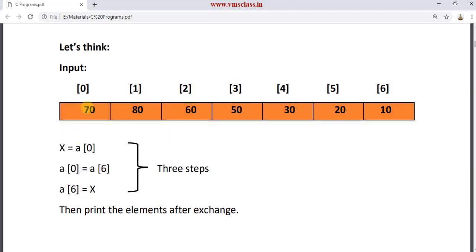Now let's think about how we can do this. We take the first element a[0], which is 70, and store it in a temporary variable x. So x holds 70. Then a[6], which is 10, is assigned to a[0]. Now a[0] is 10. Since we saved 70 in x, we assign x to a[6], so a[6] becomes 70. This is how we use a temporary variable to do the swap.